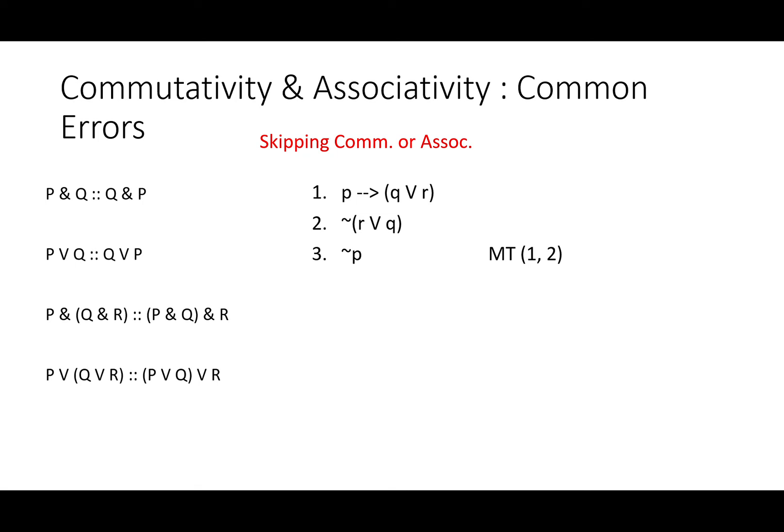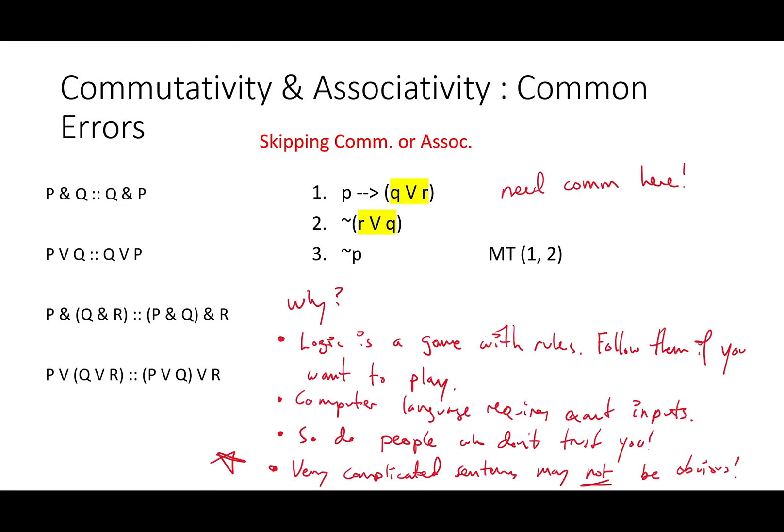Finally, the very most common thing is skipping commutativity or associativity, especially commutativity. This proof you might be tempted to go from if P then either Q or R and it's not the case that either R or Q straight to modus tollens. You know that Q or R matches R or Q and so you just say not P and be on your way. But you need commutativity. Why?